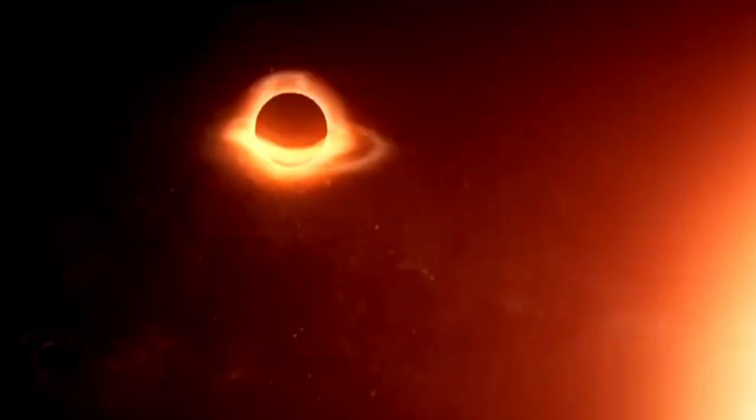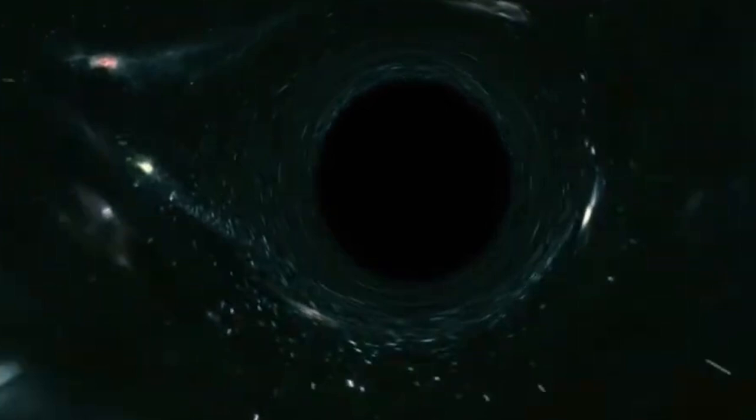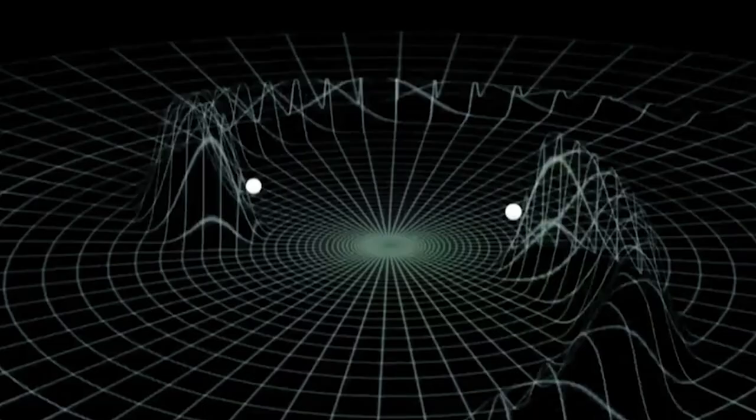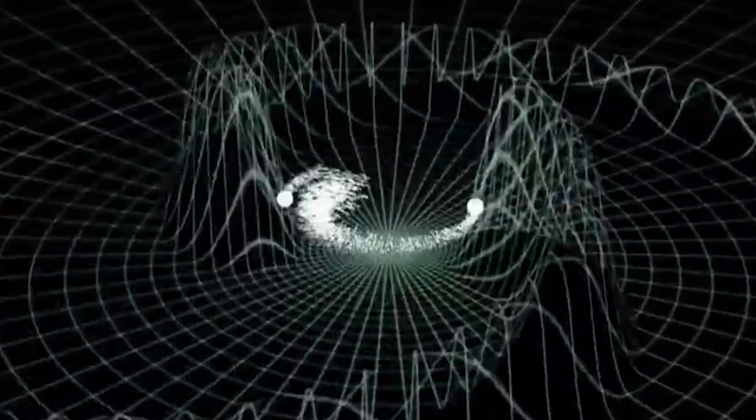Remember, we described wormholes as a tunnel in the fabric of space-time that connects two points in space. The tunnel in itself isn't dangerous to matter or objects that enter it. Rather, it is the matter or object that poses serious threats to the wormhole. Based on the most precise and latest calculations, wormholes could be fragile and tiny, meaning large matter or particles cannot pass through them.